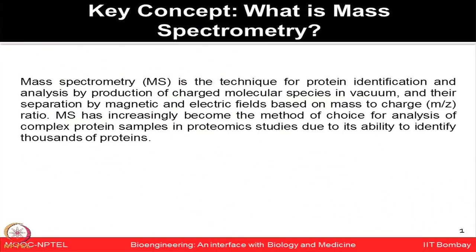So what is mass spectrometry? It is a technique for protein identification and analysis by producing charged molecular species in vacuum and then separating them by magnetic and electric fields based on the mass-to-charge ratio. This technology has become increasingly in use in the proteomics field and has now become a method of choice for analyzing complex protein samples for proteomics studies.